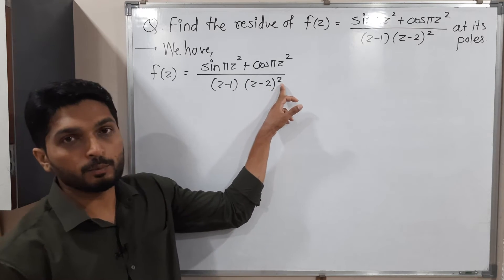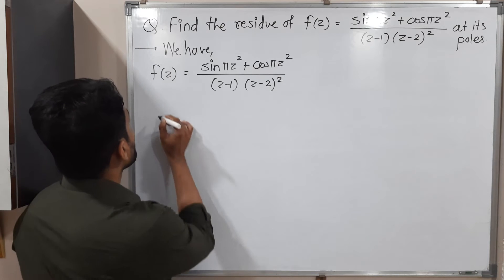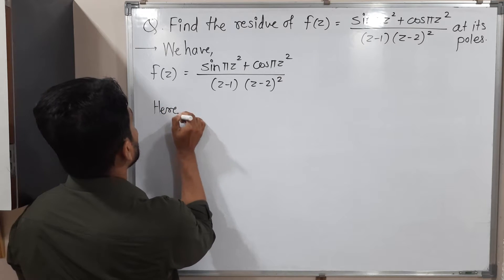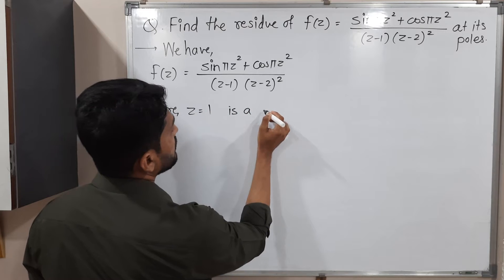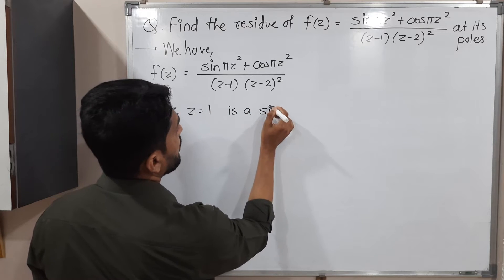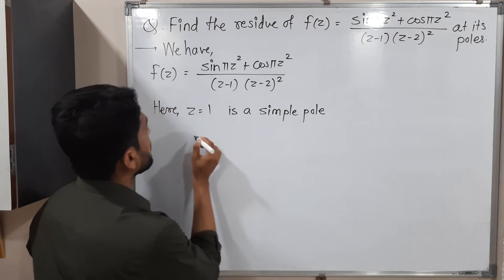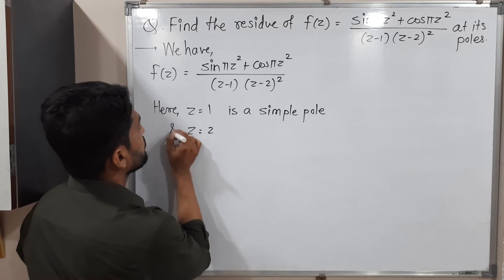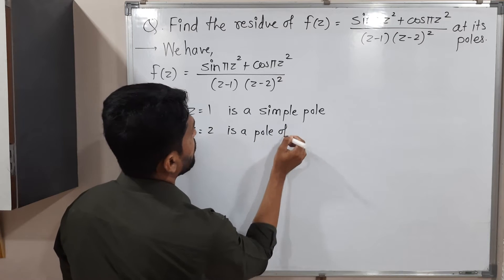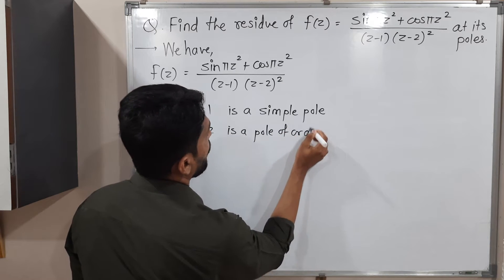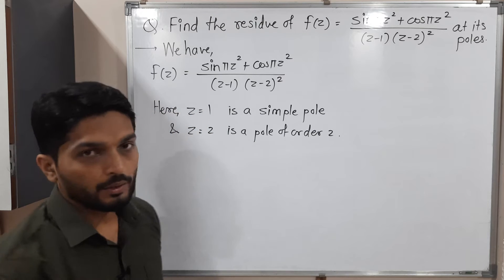The pole at z=1 has order 1, so we can also call it a simple pole. The pole at z=2 has order 2. So we have identified both poles with their orders.